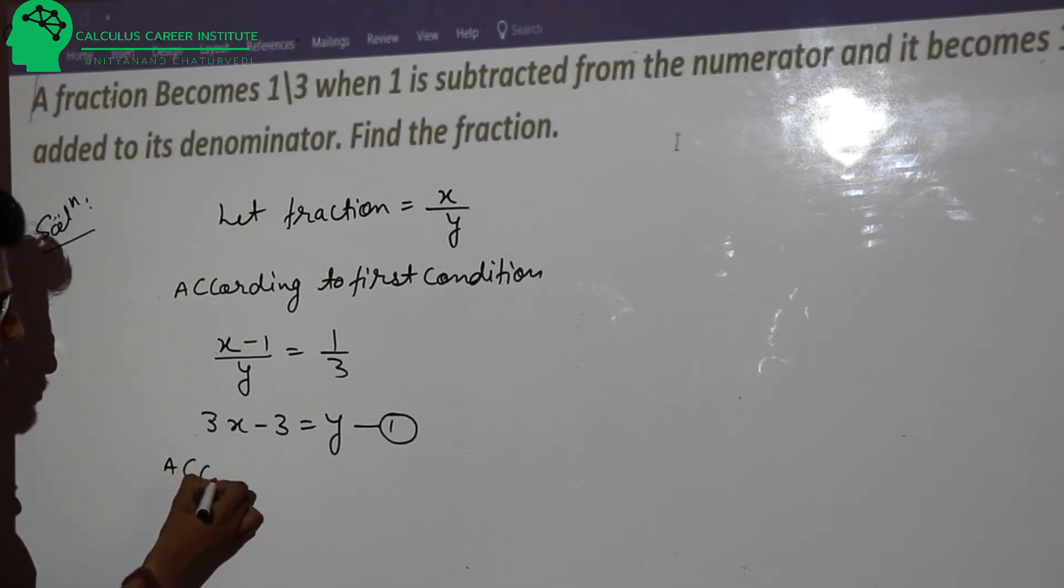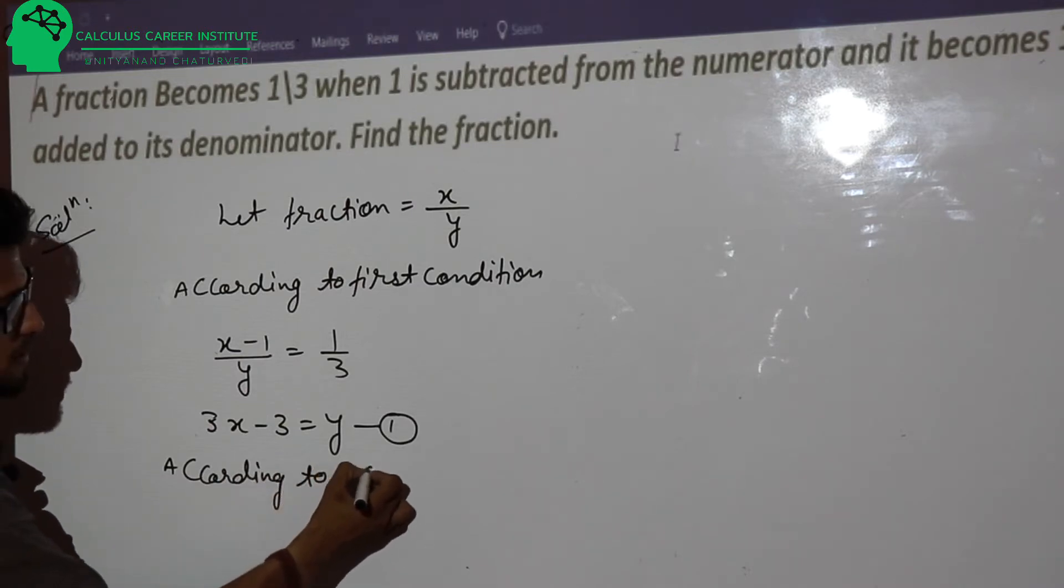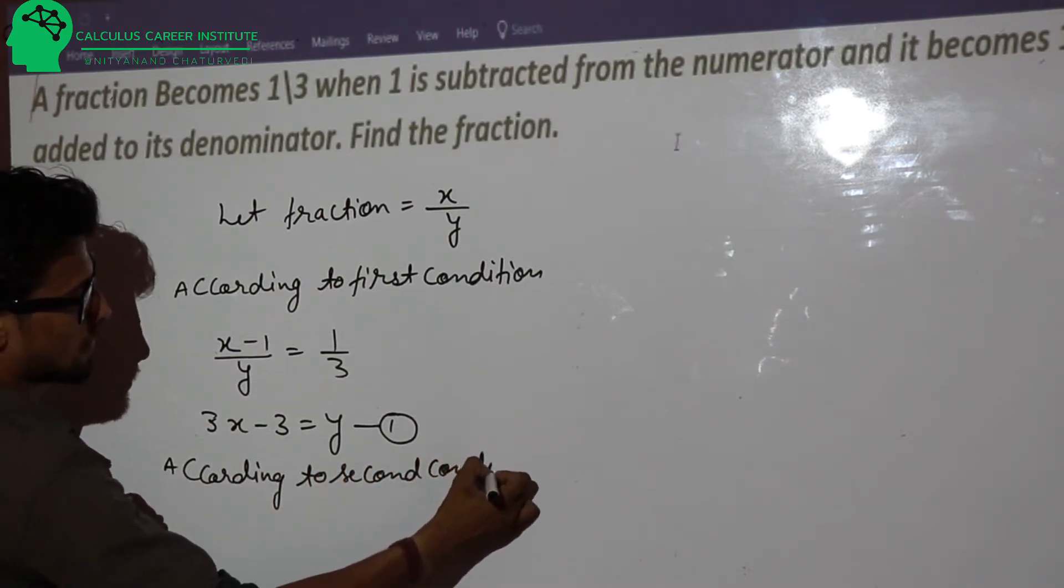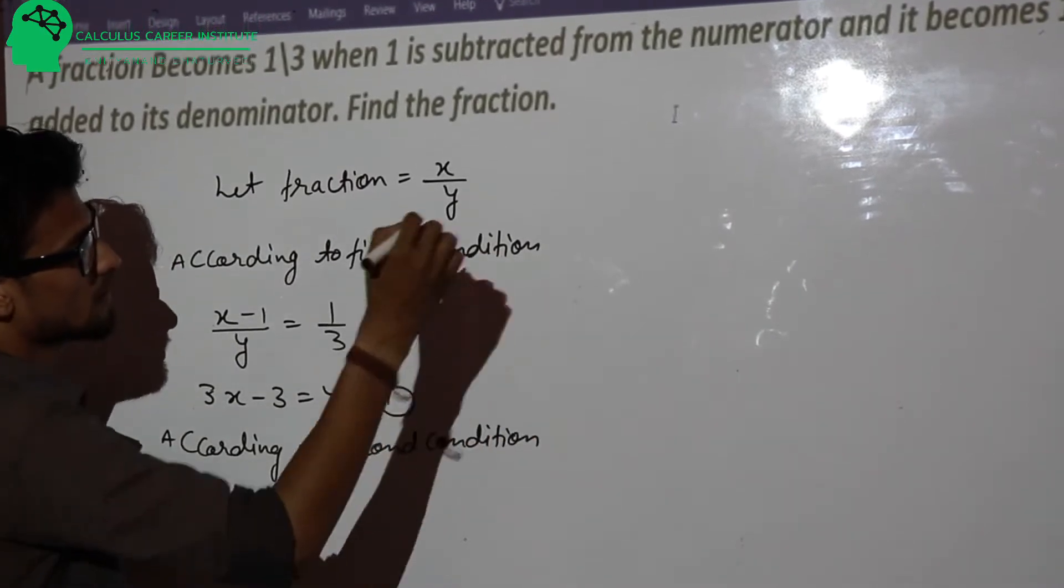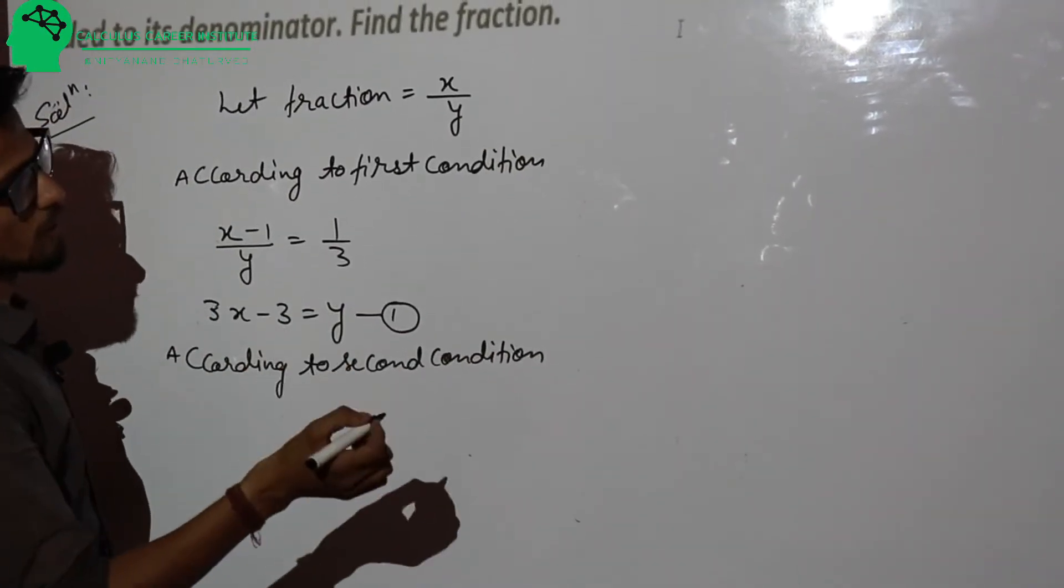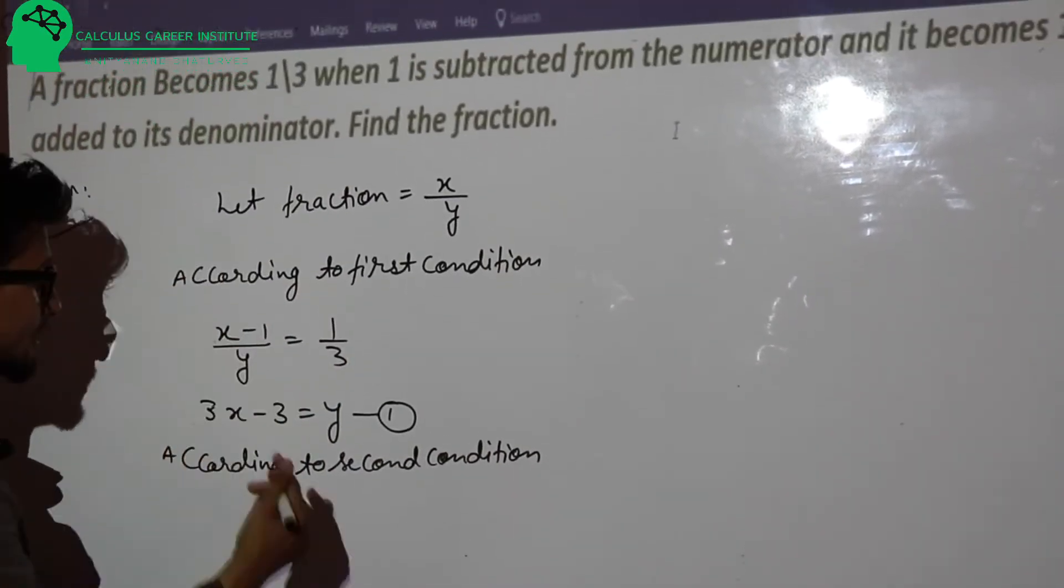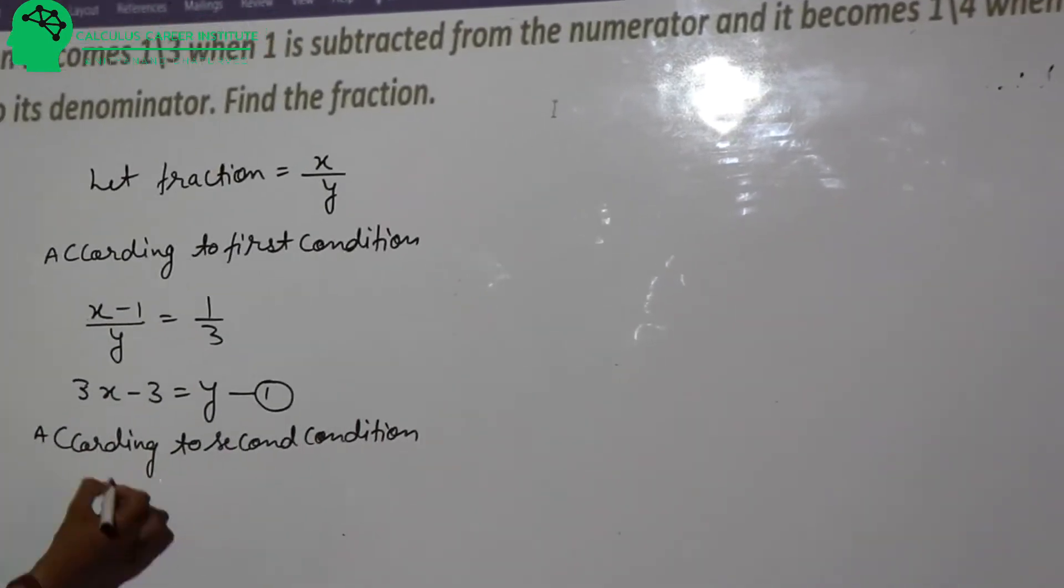Now, let's talk about according to second condition. If we talk about second condition, what do we have? That when it becomes 1 by 4, when 8 is added to its denominator. This is your numerator. This is your denominator.